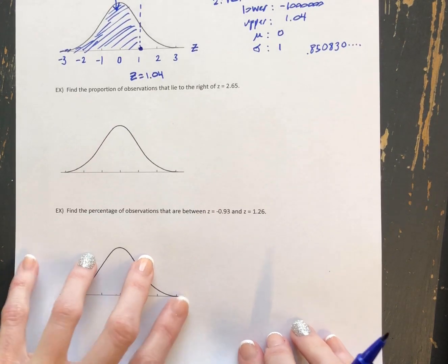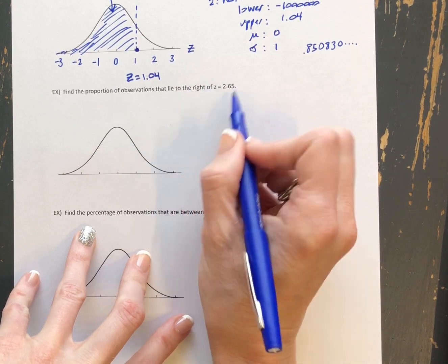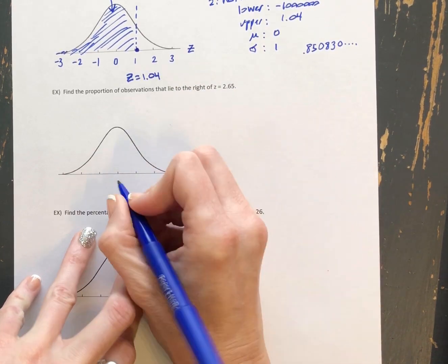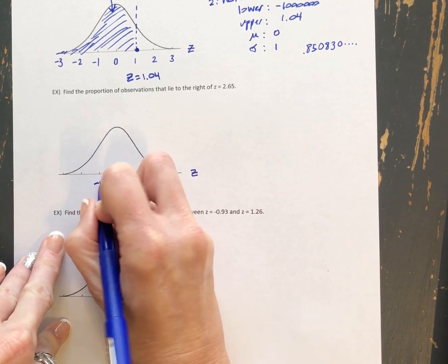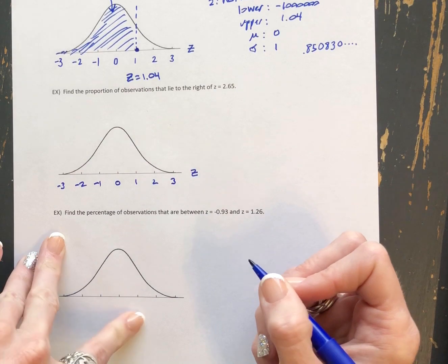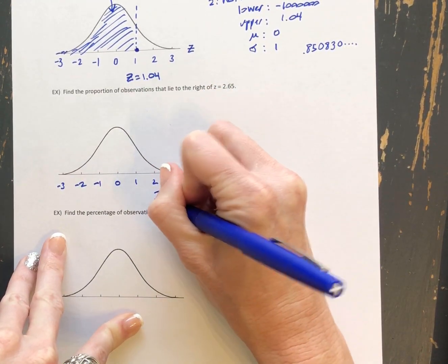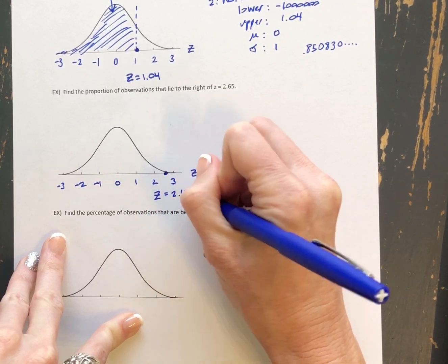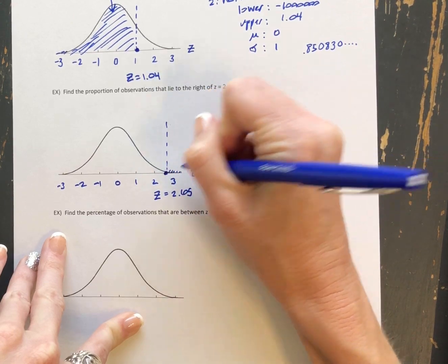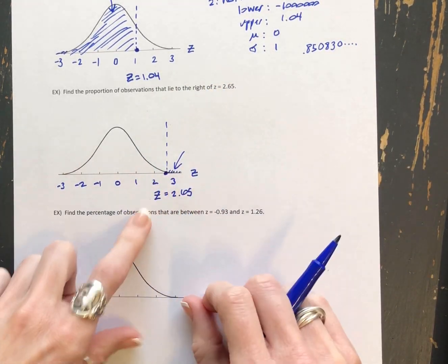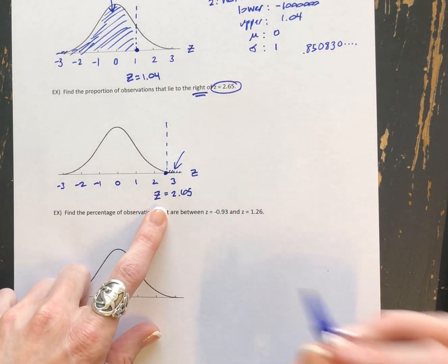We're going to move on and find the area this time that lies to the right of a z-score. So we still have a z-score. We're still centered at 0 with standard deviation 1. And this time we're up at 2.65. So we're way up here for our z-score. And I can't really even shade it very well, but I want that area, that tiny area that lies to the right of 2.65.